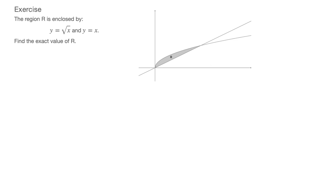In this video on integration and areas enclosed between two curves, I work through the example we see here. On the right-hand side we're given a graph with a shaded region called R, which is enclosed by these two curves. We're told that region R is enclosed by y equals the square root of x and y equals x, and we need to find the exact value of R. I'll write SOL here, as in solution.